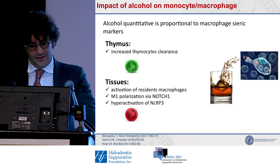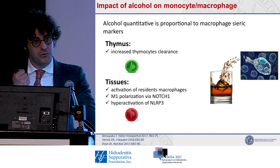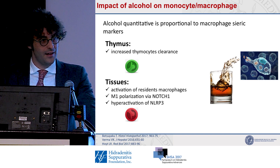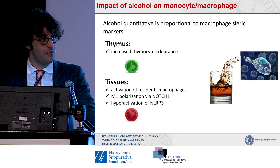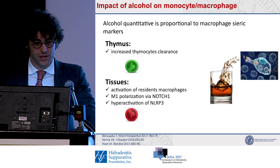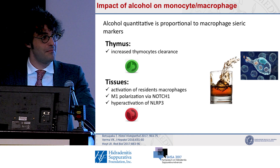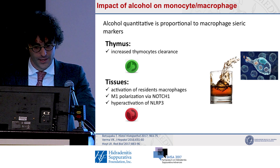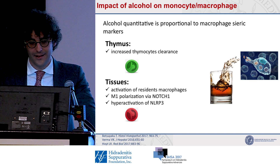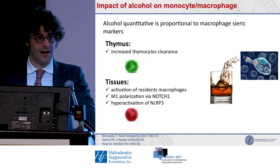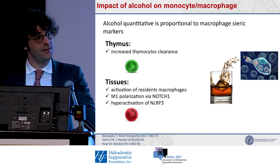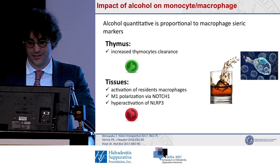The Notch-1 pathway is the same pathway involved in presenilin and other mutations we find in familial HS. Additionally, alcohol hyperactivates the inflammasome that is present in early lesions, both in neutrophils and in macrophages.